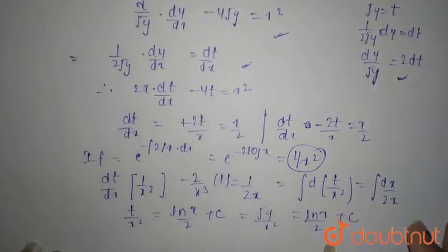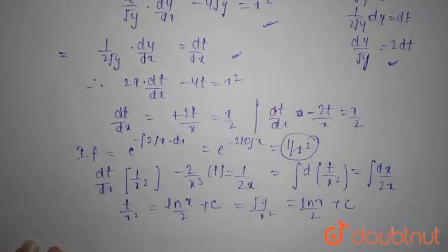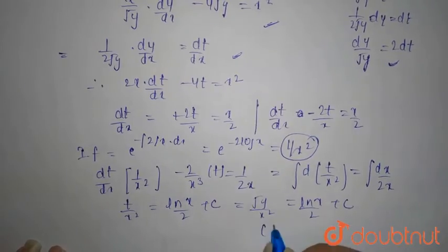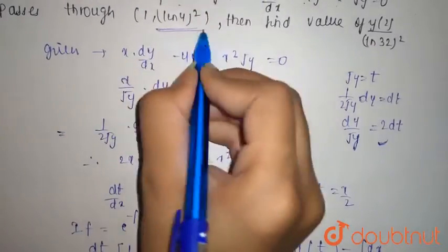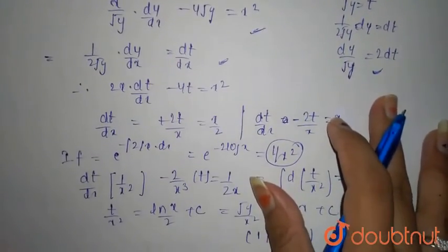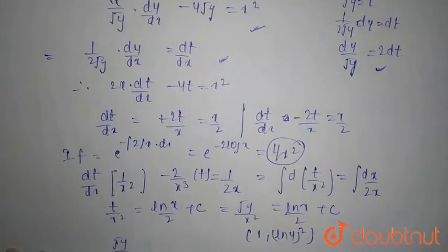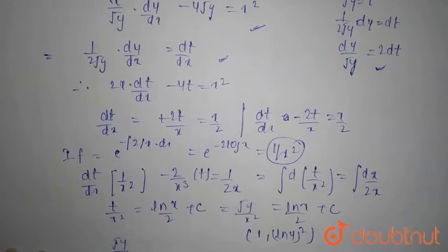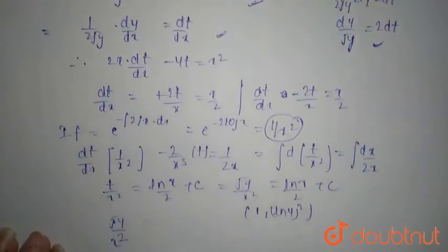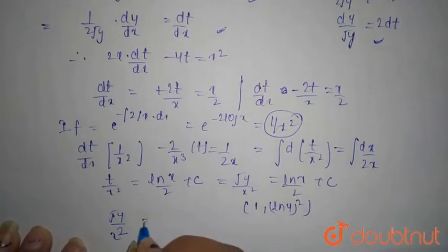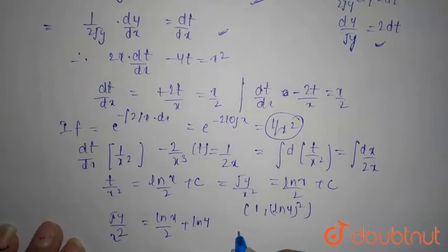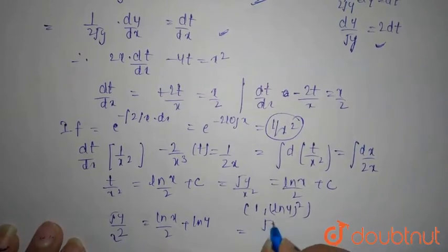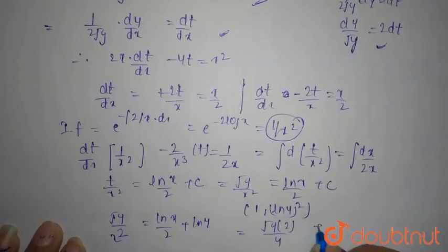We have the point that it passes from (1, ln 4)², that is given in the question. Putting that point you have root y/x² equals ln x/2 plus ln 4, which gives you root y/2 equals ln 2/2 plus ln²2.